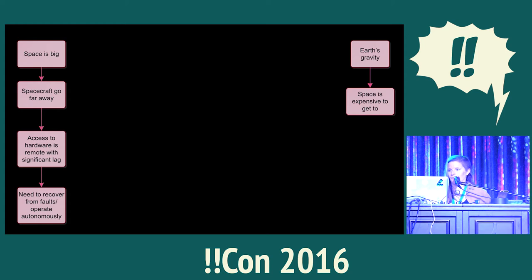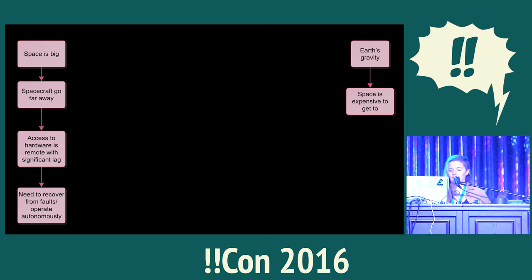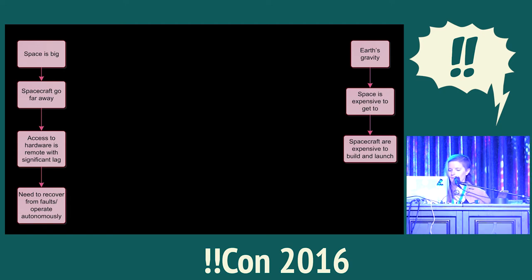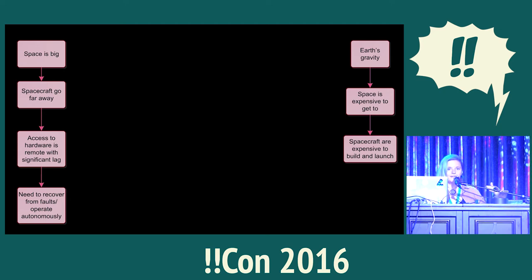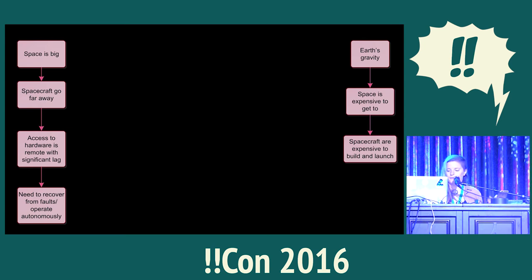We're still using rockets — there's a really interesting Wikipedia article on non-rocket space launch if you want to look that up. But for right now, space is expensive to get to in terms of energy and money. Spacecraft are expensive to build and launch. It takes about $10,000 to $25,000 per kilogram to get from Earth just to low Earth orbit, and that is far from getting you to interplanetary space.